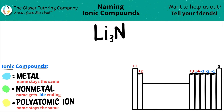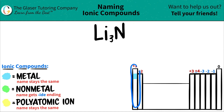Today we are going to be naming the ionic compound Li3N. I only have two elements here, so let's map them out on the periodic table. Lithium is over here on the periodic table. Remember, anything in group one are metals except for hydrogen, so lithium is going to be a metal.